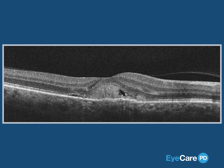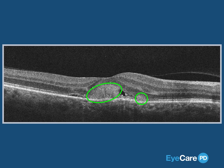Subretinal hyperreflective material, seen here, is a catch term to describe the OCT appearance of one of several examination findings. Most commonly, it represents choroidal neovascular tissue, but at times can be noted with isolated fibrosis, hemorrhage, or lipid.